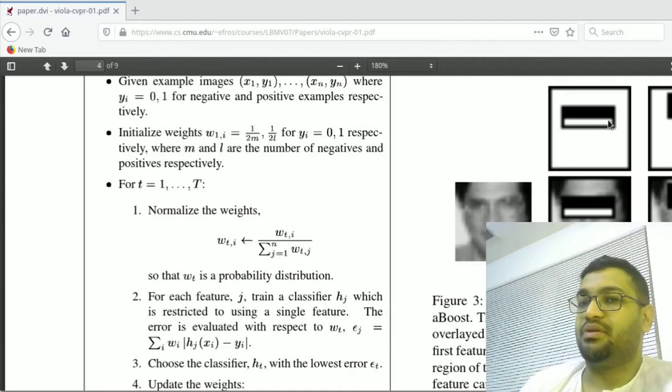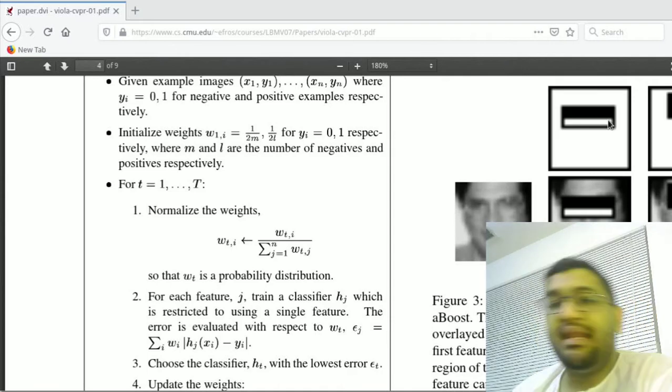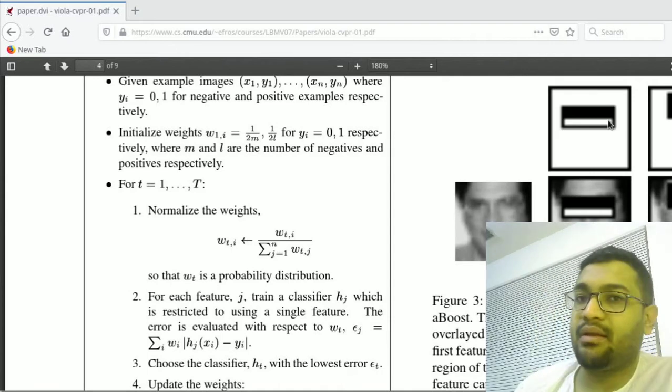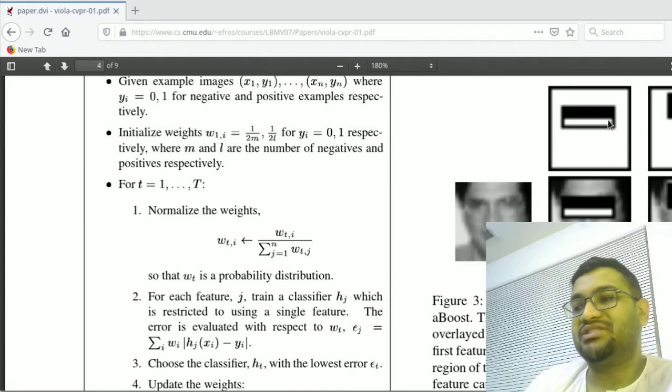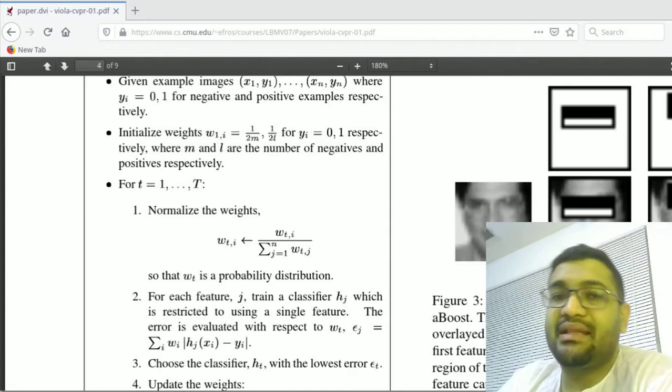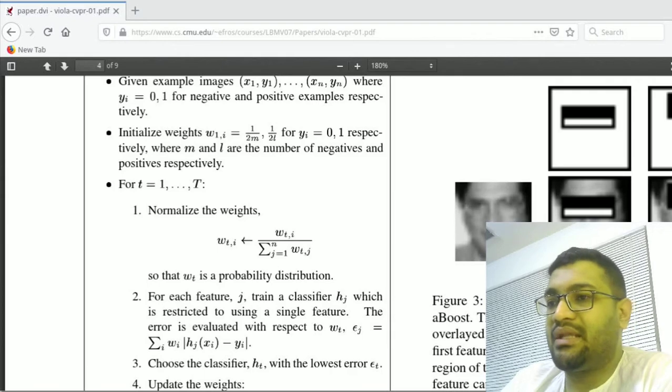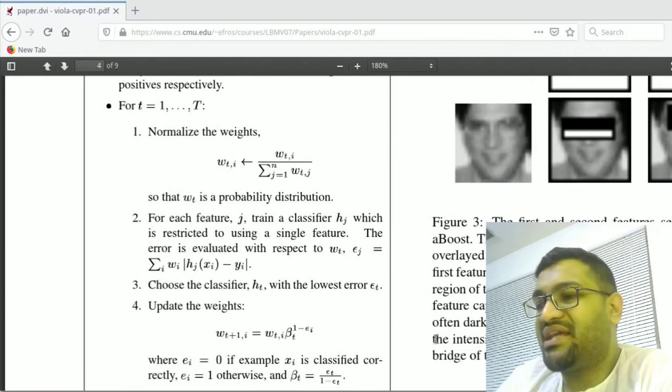Now the same principle can be applied for any other detector. Take an example of a car or any type of object that you want to do. It's using this same principle of Haar cascades. Now I gave you a fundamental example, fundamental description of what Haar cascades is.